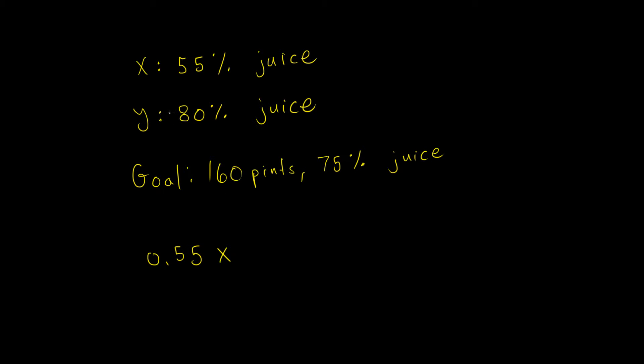And we can do the same thing for juice type Y. So it's going to be plus 0.80 times Y, where Y is the amount of the second juice that we're going to add. And what does this have to equal? This has to equal 160, of which 0.75 is real juice.